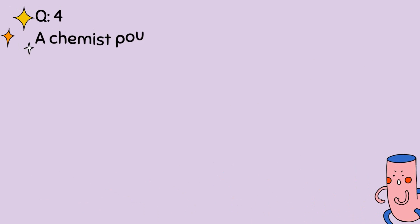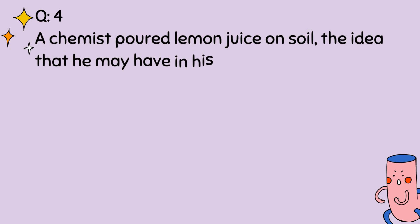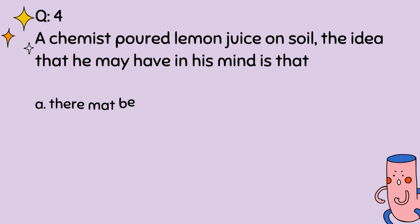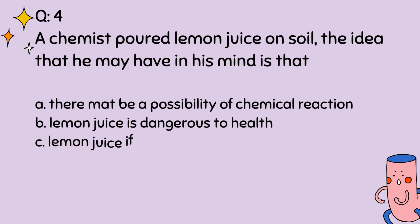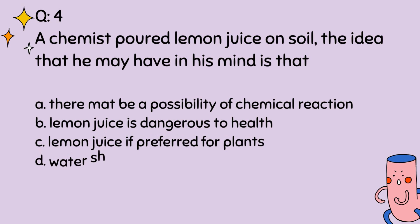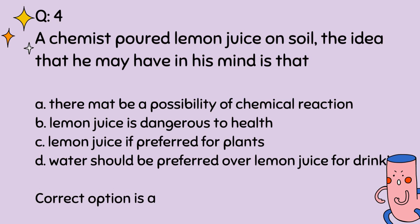Question number 4. A chemist poured lemon juice on soil. The idea that he may have in his mind is that: A. There may be a possibility of chemical reaction. B. Lemon juice is dangerous to health. C. Lemon juice is preferred for plants. D. Water should be preferred over lemon juice for drinking. Correct option is A.